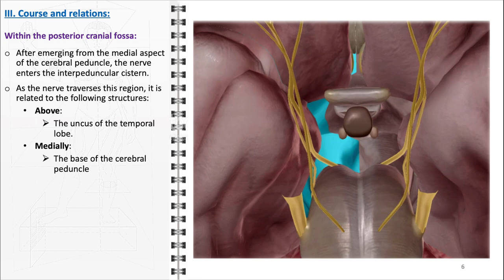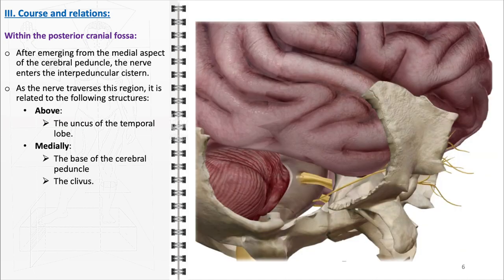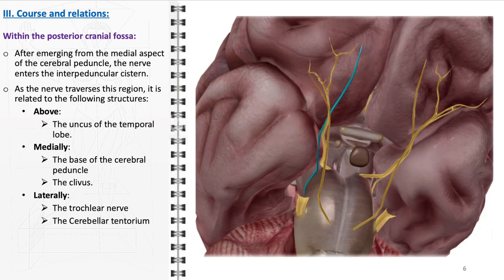Medially, the oculomotor nerve is related to the base of the cerebral peduncle, a structure containing descending motor pathways. Additionally, it lies near the clivus, a bony part of the skull base. The nerve's proximity to these structures is crucial for surgical approaches in this region, as any manipulation here could potentially affect the nerve. Laterally, the nerve is in close association with the trochlear nerve (CN4), another cranial nerve involved in eye movement. Also, the cerebellar tentorium, a dural fold, is near the nerve laterally. The positioning relative to the tentorium is important in the context of tentorial herniation and its potential impact on the nerve.